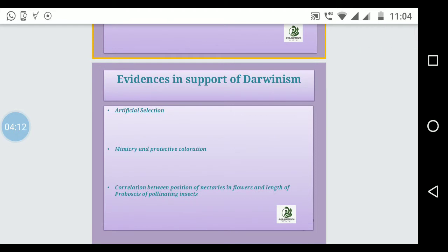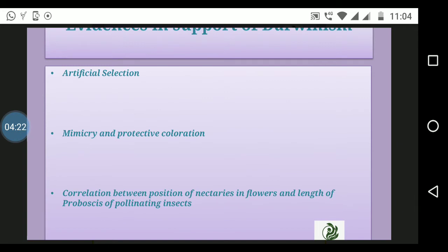Again, we will start with evidence of Darwin's theory. This is only 4 marks. What evidence comes? Artificial selection, mimicry, and correlation between position of nectaries in flowers and length of proboscis of pollinating insects. This is to elaborate. Now we will see the answer. The answer is 4 marks. The answer will end.